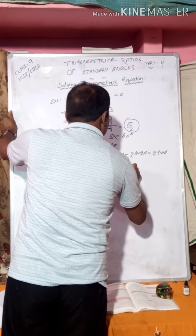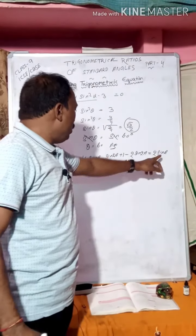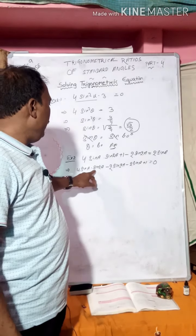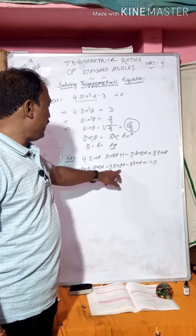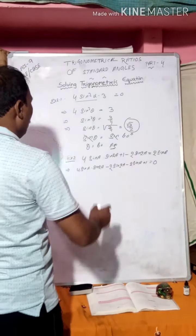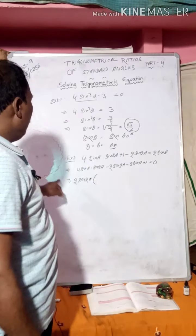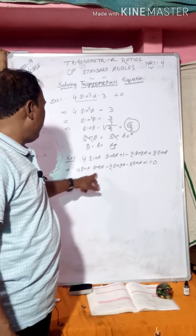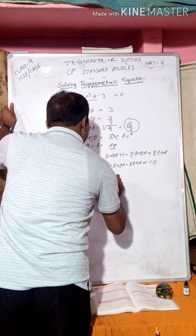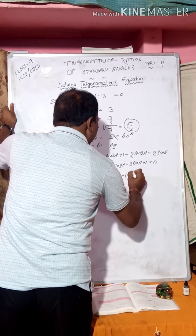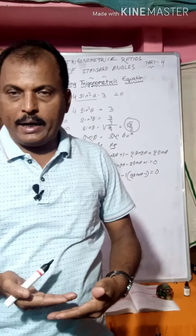Now group the terms: first group is 4sinA · sin2A - 2sin2A, and second group is -2sinA + 1. From the first group, take 2sin2A as common — dividing 4sinA · sin2A by 2sin2A gives 2sinA, so we get 2sin2A(2sinA - 1). From the second group, take 1 as common to get 1(2sinA - 1) but with a negative sign: -(2sinA - 1). So (2sinA - 1) is fully common, making this a factorization.